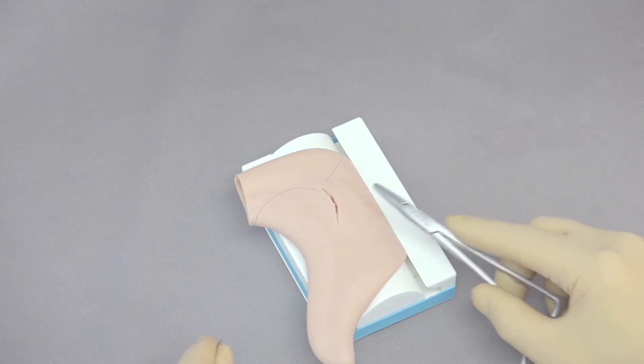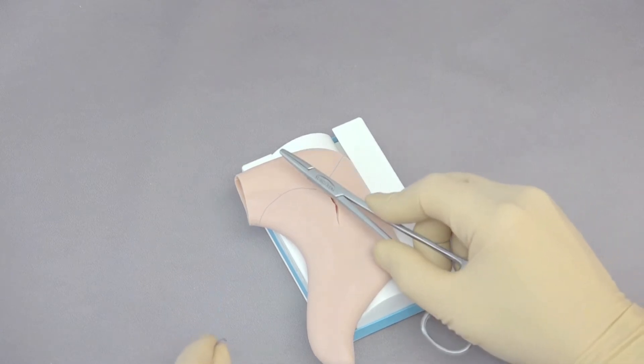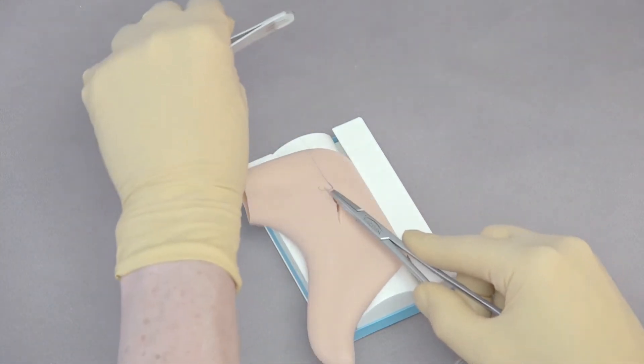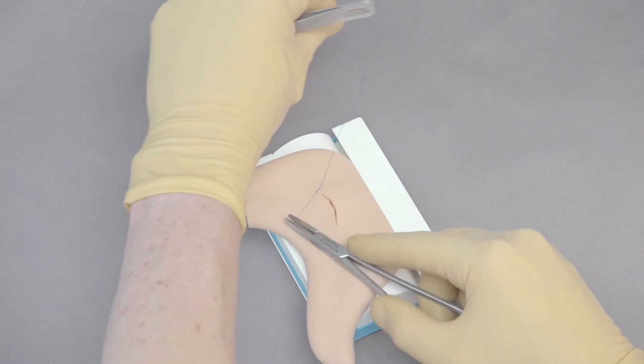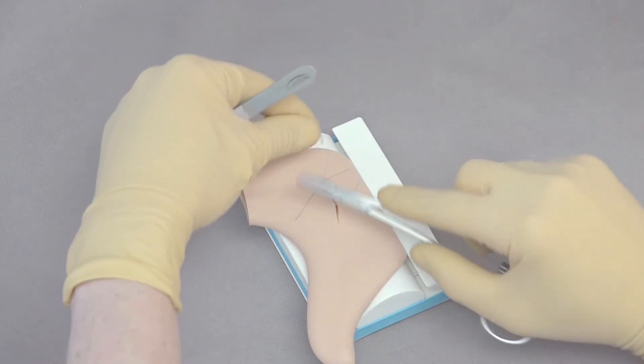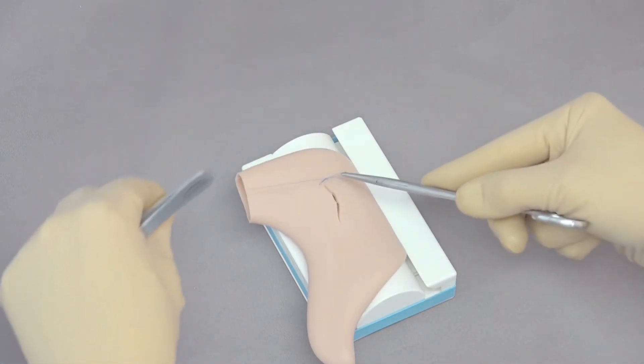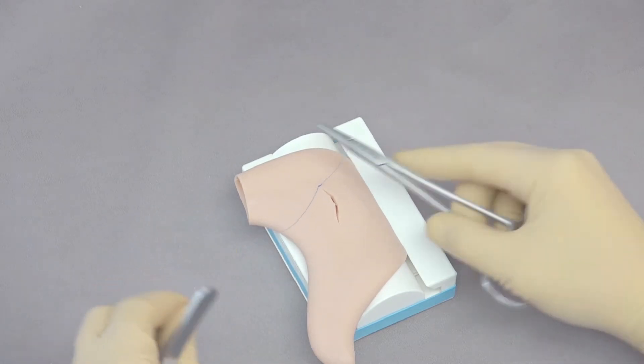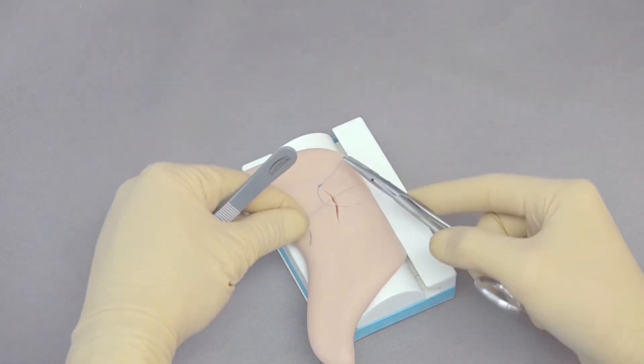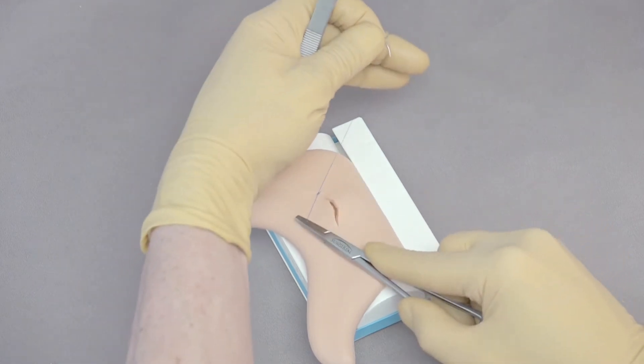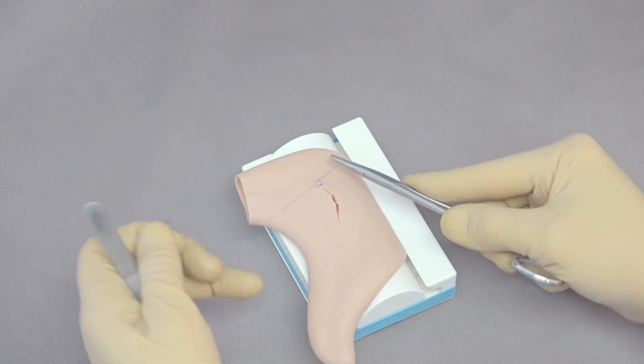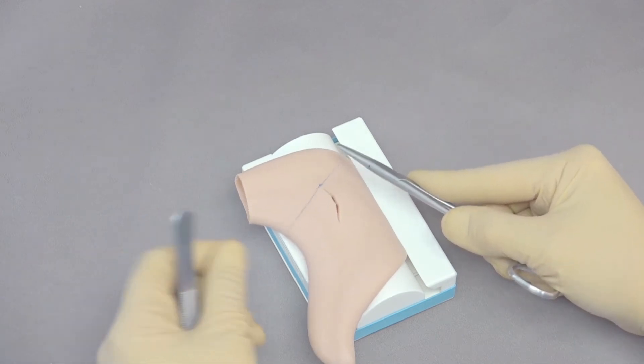To do this, we're going to use square knots. Needle holder goes in the middle of the loop, around once, and tightens. Back in the middle, around once, and tighten. We're going to snug it down until we have the tissue opposing. Back in the middle, around once, and tighten. Back in the middle, around once, and tighten. That's four throws. Most of our modern sutures work very well with that.